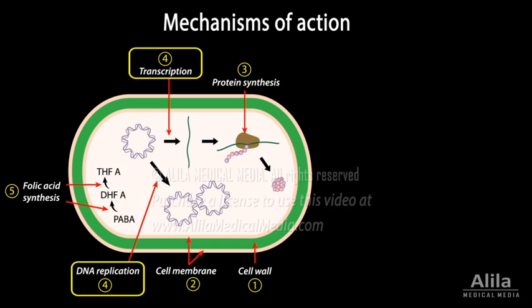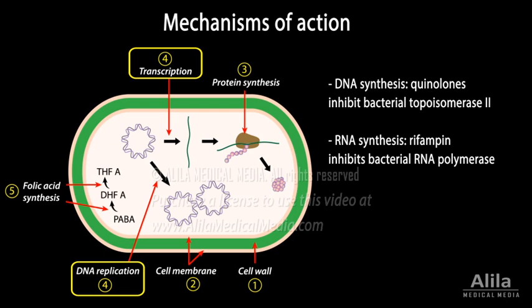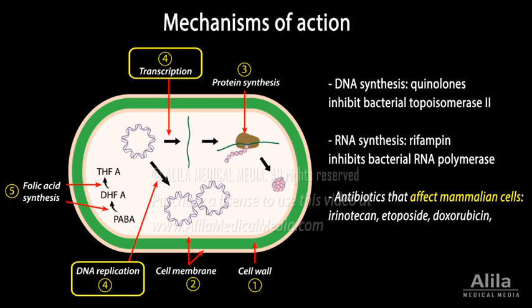Inhibitors of nucleic acid synthesis: some antibiotics interfere with DNA synthesis by binding to bacterial topoisomerase II, the enzyme that relaxes supercoiled DNA before its replication. Some others interfere with RNA synthesis by inhibiting RNA polymerase. Some antibiotics of this class are selective and do not interact with mammalian counterparts of these enzymes, while others do affect mammalian host cells. The latter are used for cancer treatment instead, because cancer cells grow faster than normal cells and are more affected by the action of these agents.